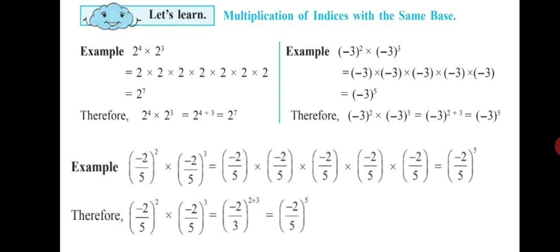Third example: minus 2 upon 5, raised to the power of 2, into minus 2 upon 5, raised to the power of 3. Take the base minus 2 upon 5 as common and add the index 2 plus 3. Note: in the second step it is written minus 2 upon 3 — that is a mistake; it should be minus 2 upon 5. The base will not change. So the final answer is minus 2 upon 5, raised to the power of 5.